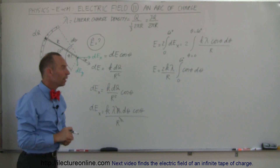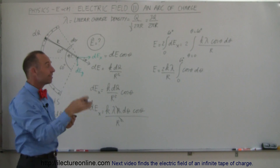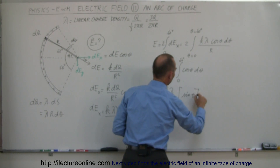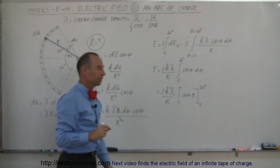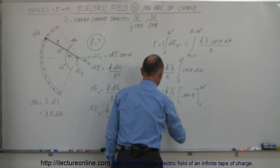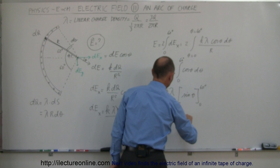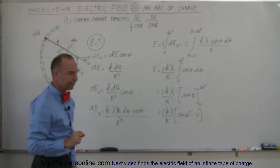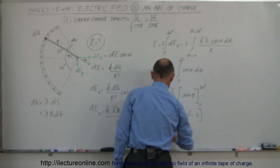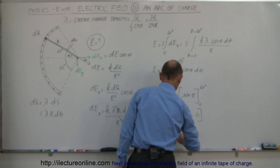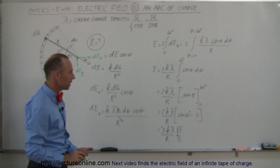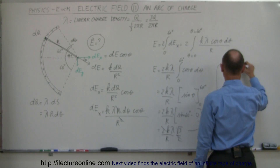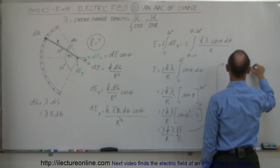That's fairly easy to integrate. The integral of cosine is sine, so this equals 2K lambda over R times the sine of theta, evaluated from 0 to 60 degrees. Plugging in the limits: 2K lambda over R times the sine of 60 degrees minus the sine of 0. The sine of 0 is 0, and the sine of 60 degrees is square root of 3 over 2. So we get 2K lambda over R times square root of 3 over 2. The 2's cancel, leaving the square root of 3 times K lambda over R.